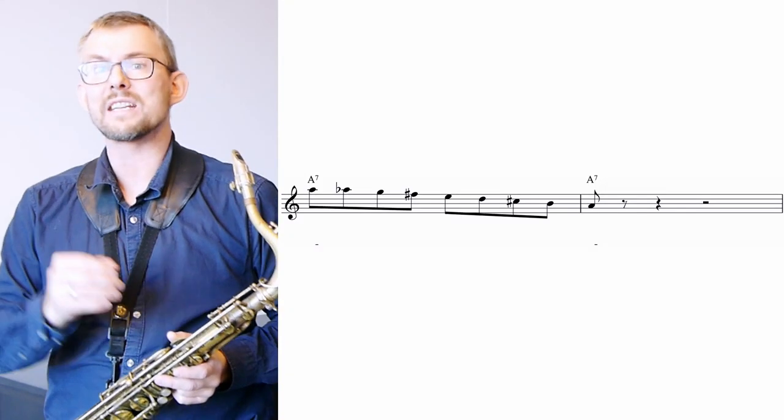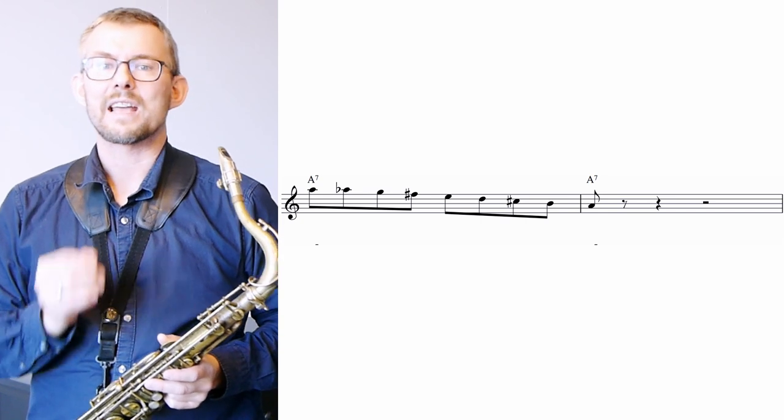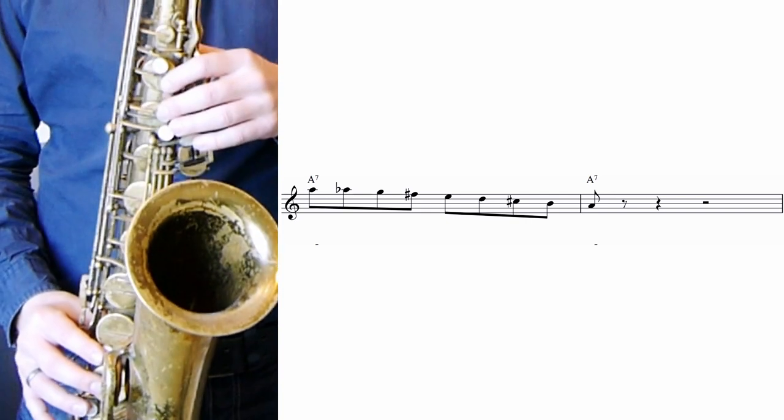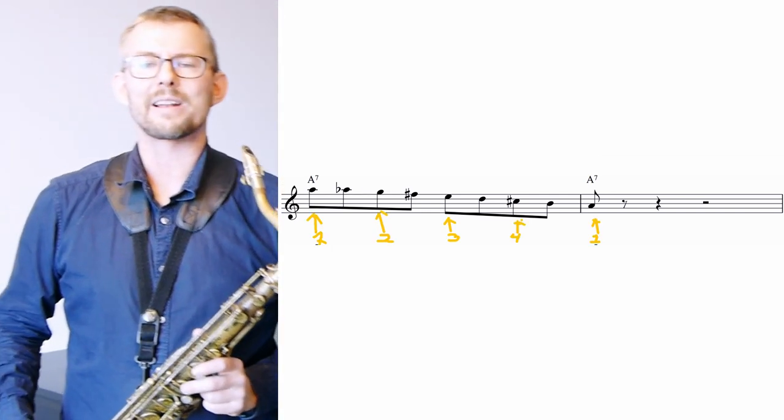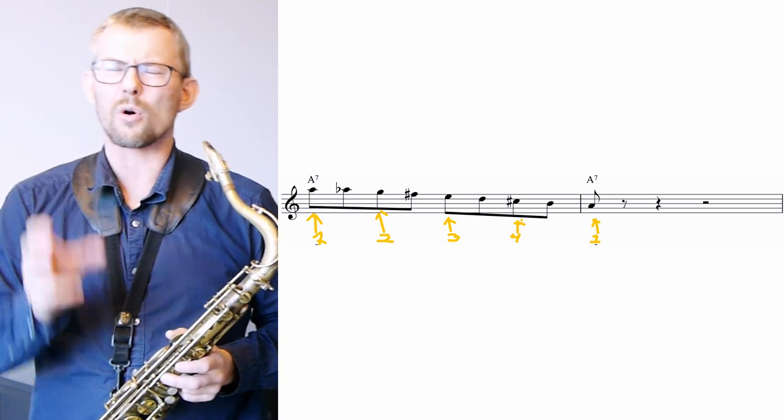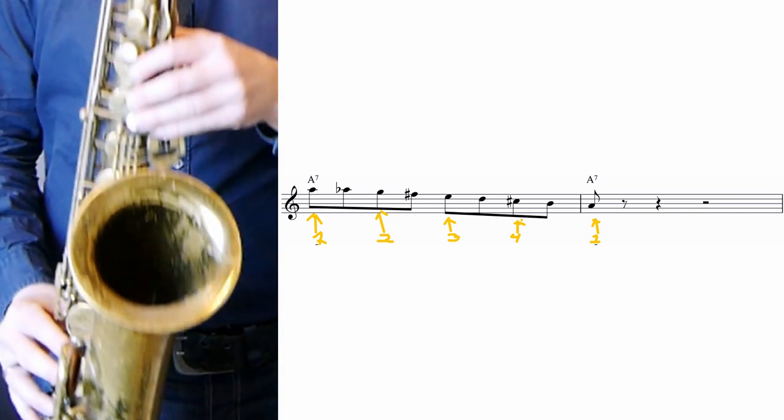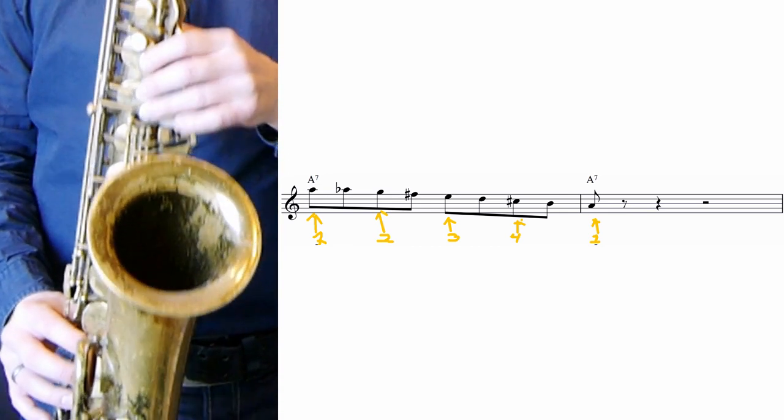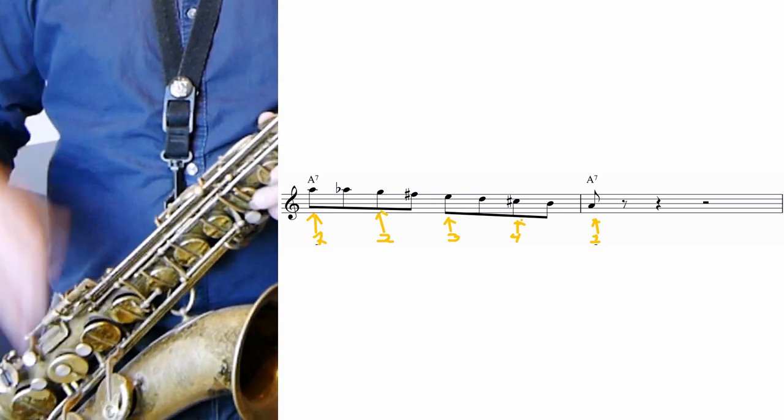The chromatic bebop note is added to the scale to get both the root and the 7th on the beat when playing the scale. You can see both the A, the root of the A7, and the G, the 7th of the A7, is landing on the beat. When you add this to the dominant A7 scale, you see that you hit all the chord notes right on the beat. You have them all on the beats. When you begin the scale on the beat, you always have the chord notes on the beat.